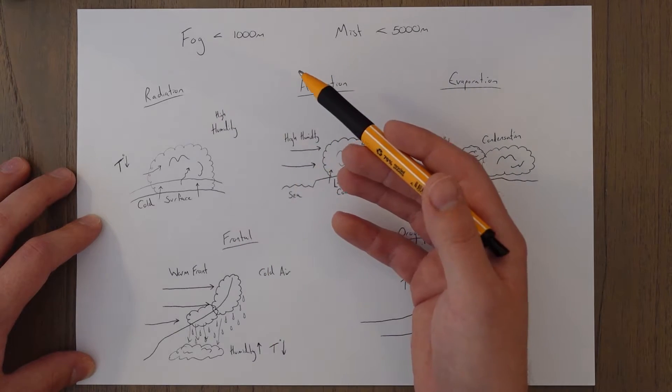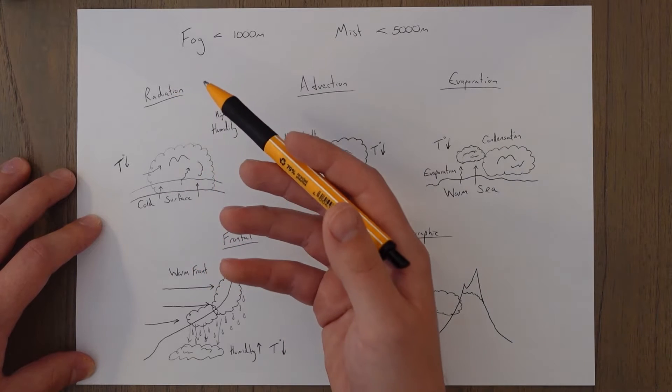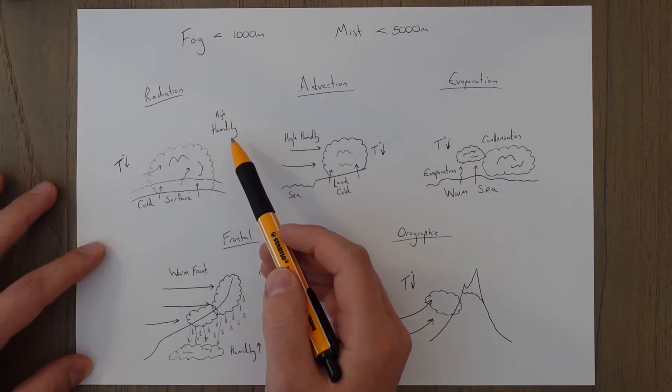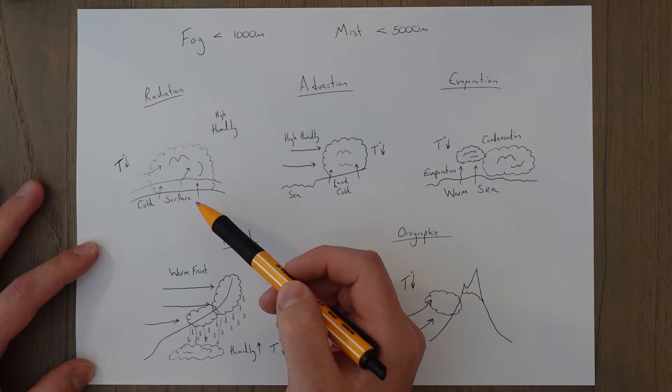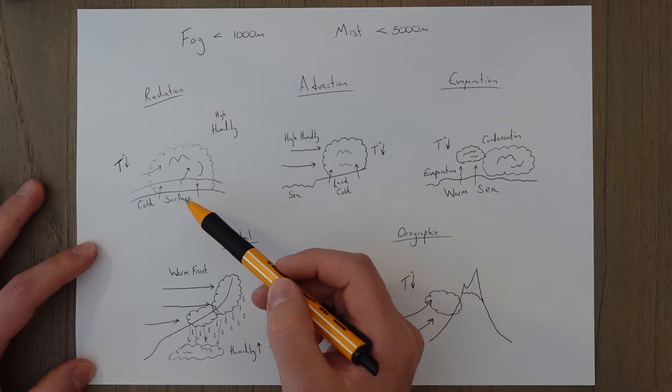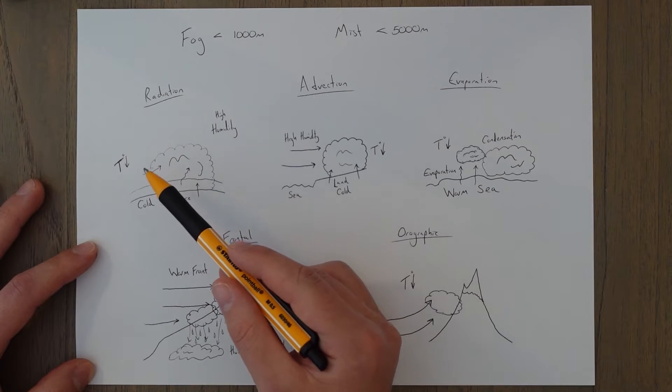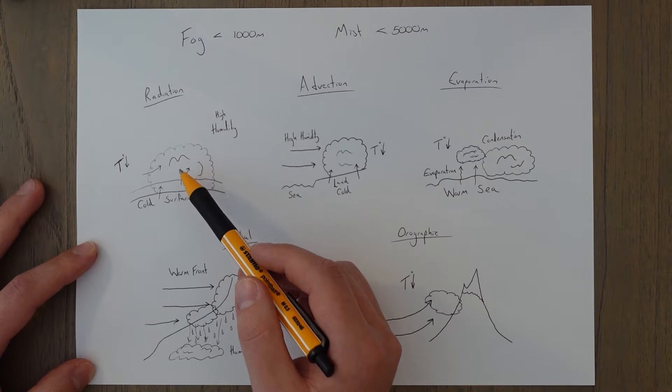There are a few different types of fog and in the class on clouds I explained what radiation fog is, but I'll just give a quick reminder now. When we have relatively high humidity levels and on a cold night the surface temperature of the earth cools down, this cold surface cools the air just above it through radiation, and if it cools the air down to below the dew point then the moisture in the air will condense and form into clouds.